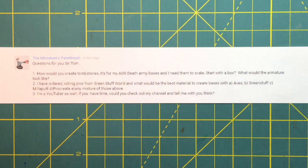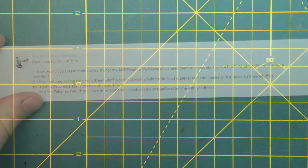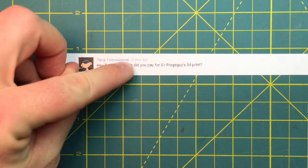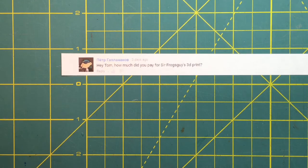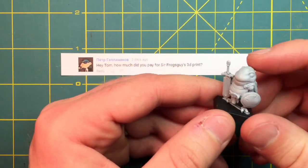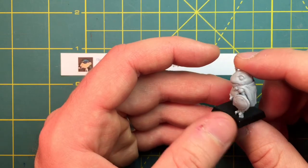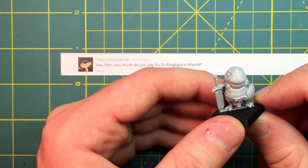The last question is: I'm a YouTuber, if you have time could you check out my channel and tell me what you think? Yes, I will. I'm sorry I haven't been able to yet, but I will check it out and let you know. This next question comes from someone in Russia - I can't read the name but hopefully you'll catch this. Hey Tom, how much did you pay for Sir Frogsworth's 3D print? The low res print that I did - if Sir Frogsworth, as you can see here, I ended up spraying him to make him photograph a little better. This is a 25 micron print that came off of a Form 2 and it only cost me about 20 bucks, and that's with shipping.